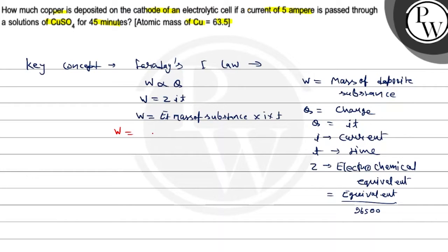And equivalent mass of the deposit substance is copper, and copper's molar mass is 63.5. And equivalent mass is molar mass divided by N factor.